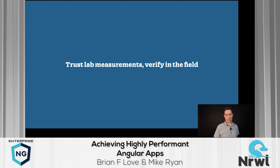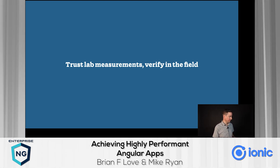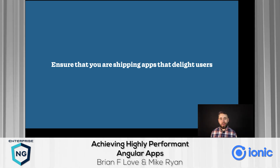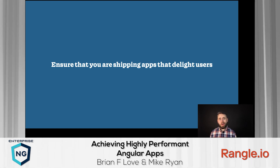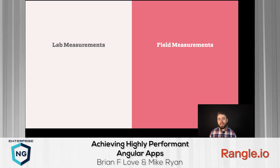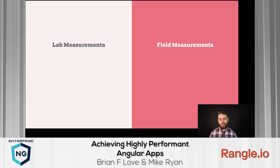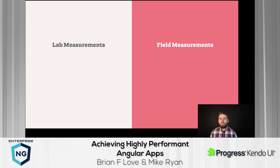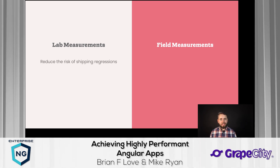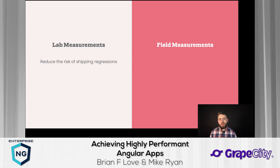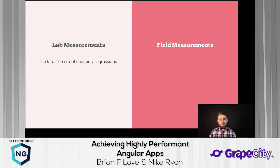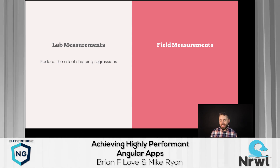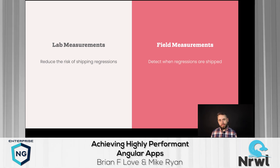We want to ensure the apps we're shipping are really delightful for users — that they're performant and respond well. To do this we're introducing field measurements into our Angular application. Field measurements differ from lab measurements in critical ways. A lab measurement reduces the risk of shipping a performance regression — it runs during development to make sure we don't accidentally cause performance to slip — but inevitably something will regress. A field measurement is great at detecting when regressions are actually shipped to users.